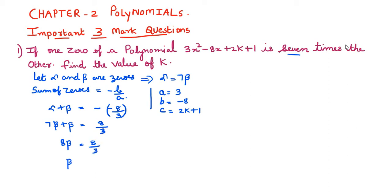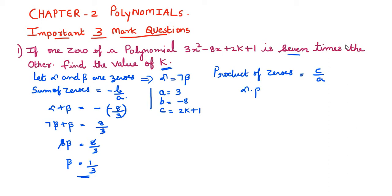The 8s cancel, so beta equals 1 by 3. However, they have not asked for the value of alpha or beta — they have asked for k. To find k, we use the product of zeros formula: alpha times beta equals c by a, which is (2k plus 1) divided by 3.